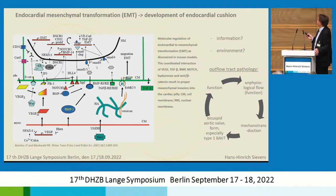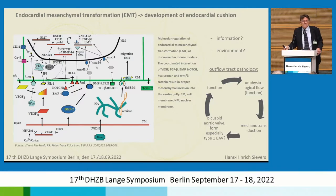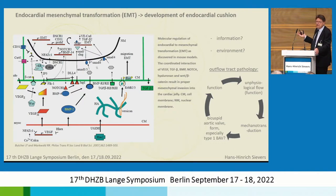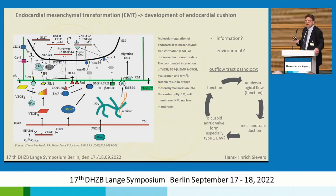The other miracle is: what about the environment? I have often seen in bicuspid aortic valve surgery that the interventricular septum was not normal. And I can imagine that there is some flow and physiological distribution in the outflow tract that may have an influence via mechanotransduction on the development of the endocardial cushions. So it is an interesting question, because we don't have a real master gene for the bicuspid aortic valve.